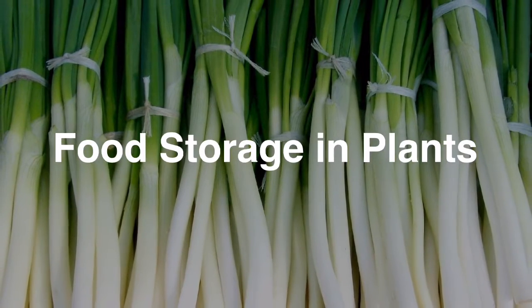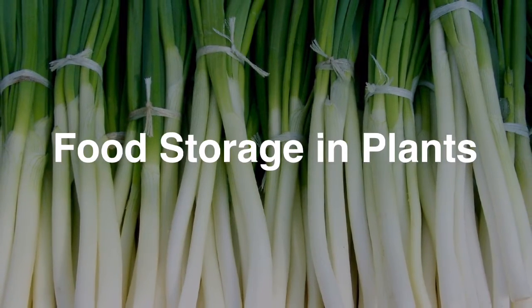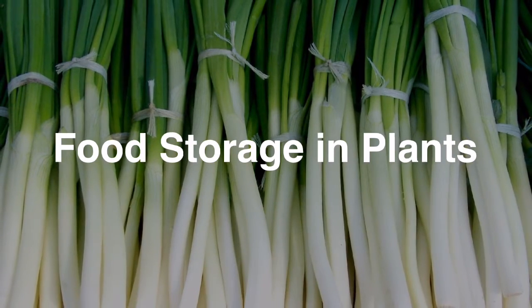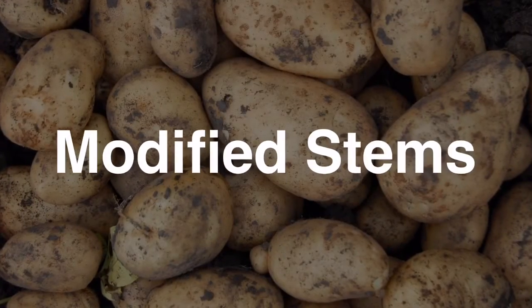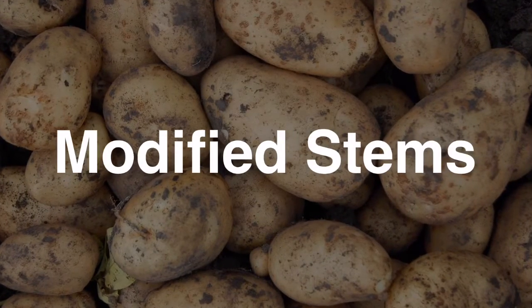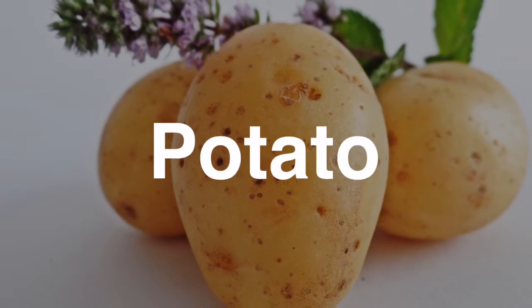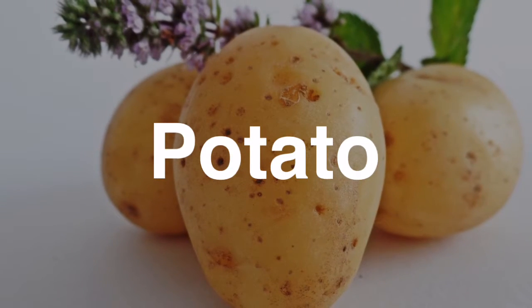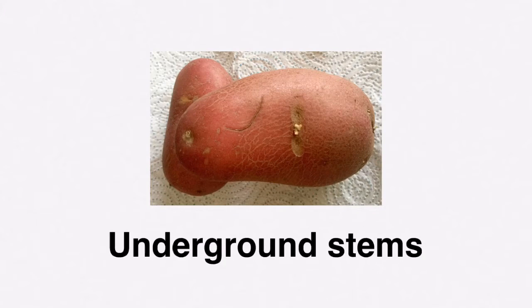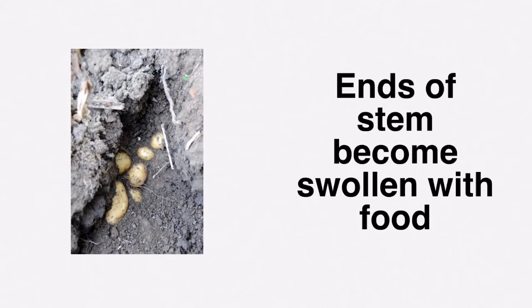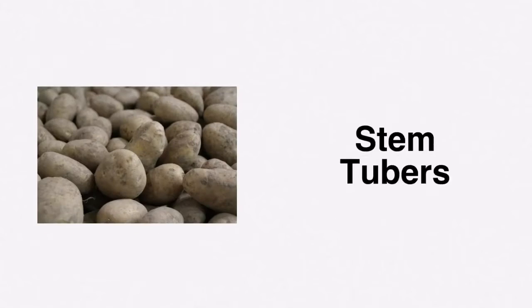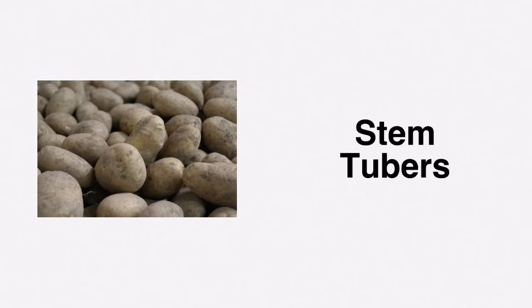Food storage in plants. How do plants modify or adapt their parts to store food? Some plants can modify their stems in order to store food, and the most familiar example has to be the potato. The potato plant develops an underground stem, and the ends of these stems become swollen with food. These swollen parts are known as stem tubers.